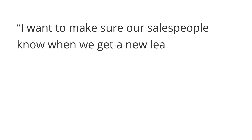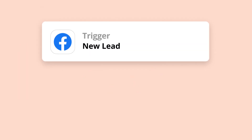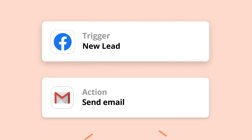Let's walk through an example of how you'd put this into practice. First, decide what you want to accomplish — for example, I want to make sure our salespeople know when we get a new lead. Second, decide what apps need to be involved and give them permission to talk to each other. Let's say we get new leads from Facebook and our sales folks prefer to receive emails. Now set the rules: when we get a new lead in Facebook, send an email to our sales team. In Zapier language, the 'when' is a trigger and the 'do' is an action.